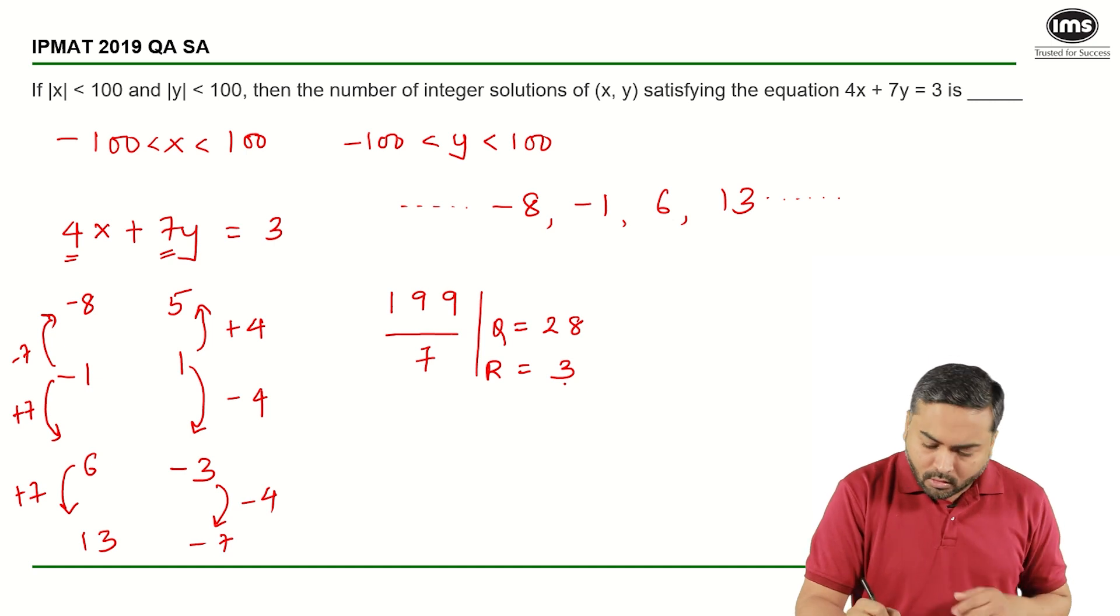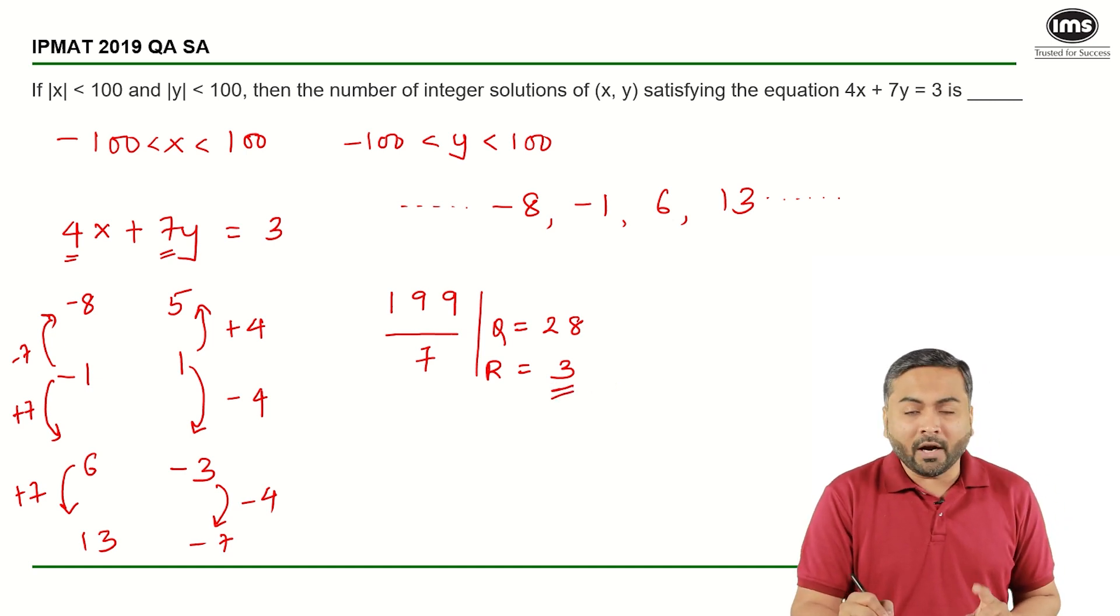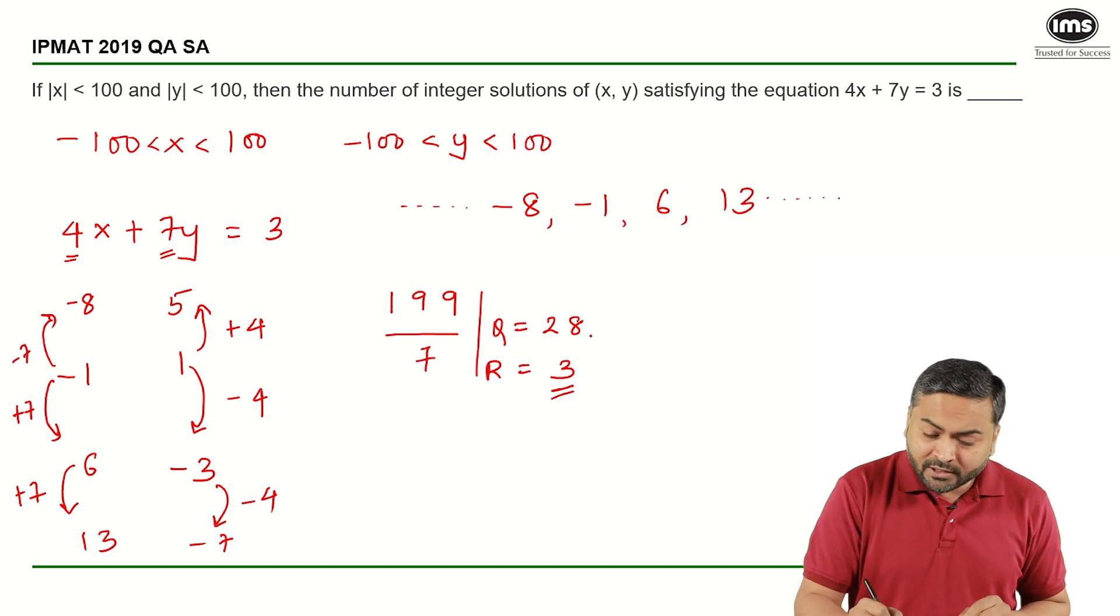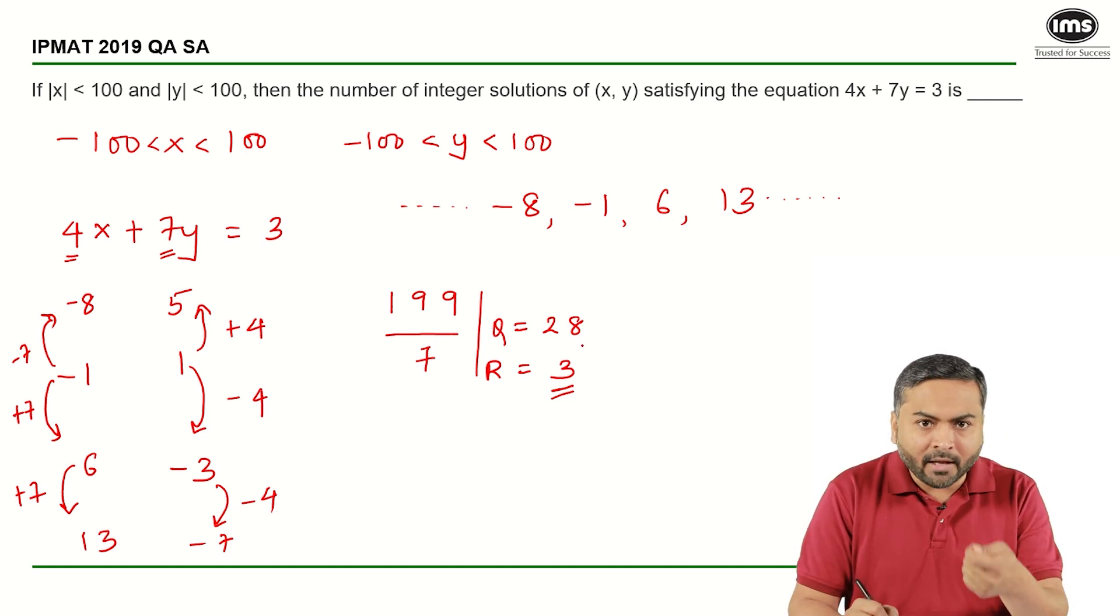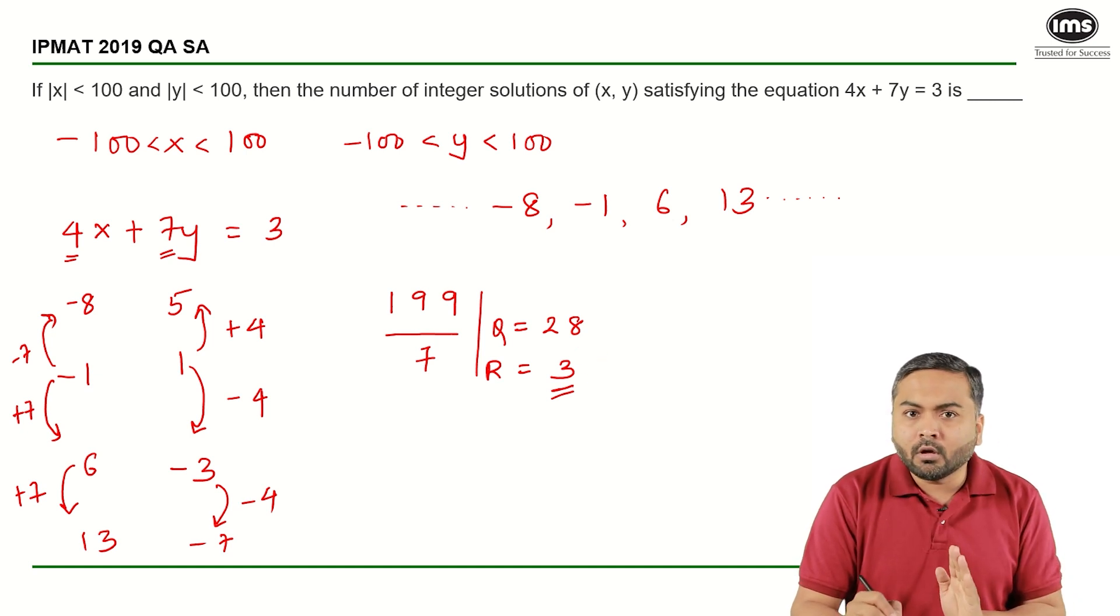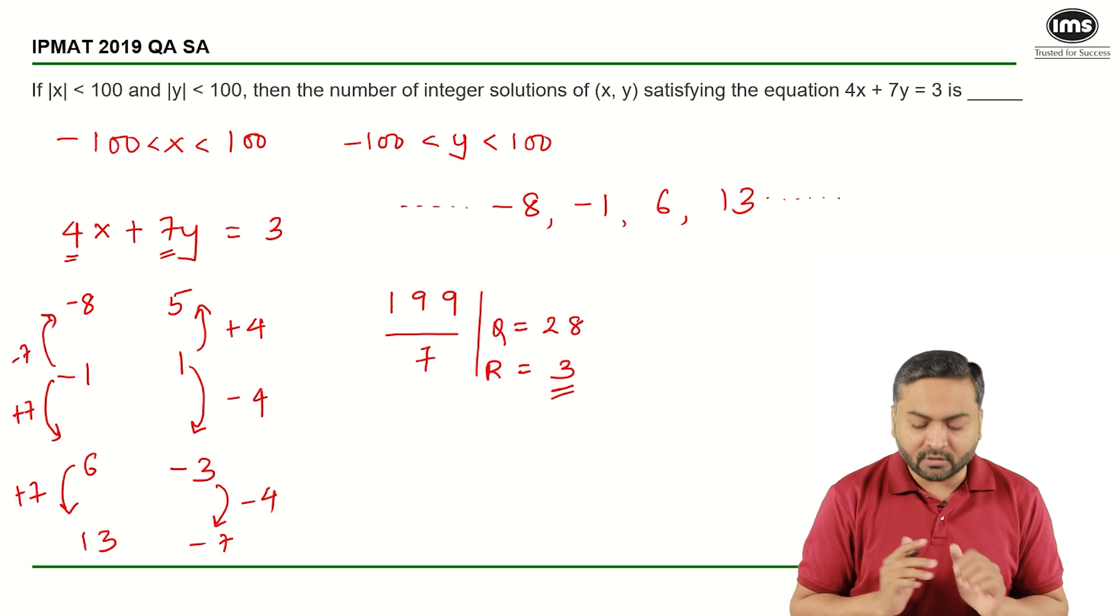Now, what to do with this remainder? Understand guys, your answer will be either 28 or it will be 29 plus 1, if one of the first 3 values in the series is divisible by 7.